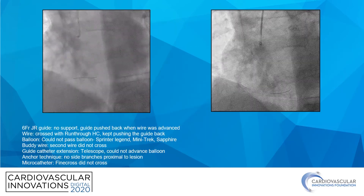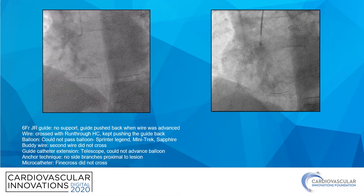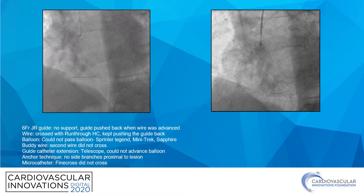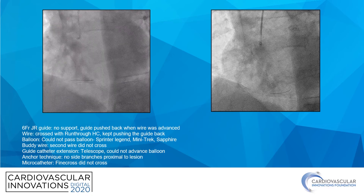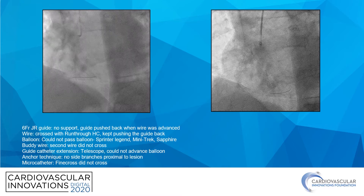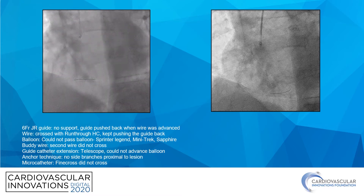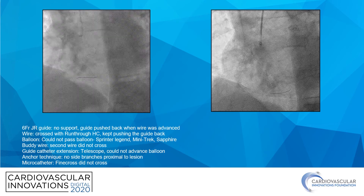I started off with a six French guide, which really did not give me much support, and wired it with a run-through hypercoat. Every time I pushed the wire forward, it would push the guide backward. A balloon would not pass — I used multiple low-profile balloons. A second buddy wire would not pass. I used a guide catheter extension, but it was still pushing the guide and guide catheter out.